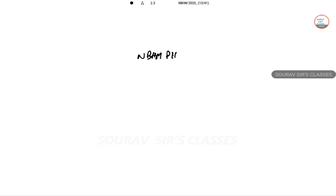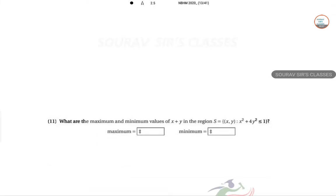This is NBHM PhD solution 2020, question number 11. What are the maximum and minimum values of x plus y in the region S where x squared plus 4y squared is less than or equal to 1?